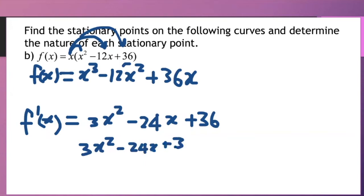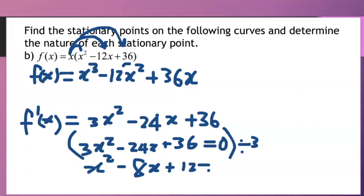Now looking at this it is divisible by 3. So I am going to divide the entire equation by 3. So 3 into 3x squared the 3 cancel. 3 into minus 24x that gives me minus 8x. Then 3 into 36 that gives me 12 and equals 0 because 0 divided by 3 is 0.